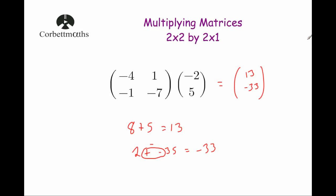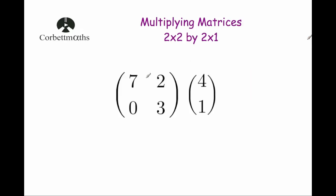And that's it. So to multiply a 2 by 2 matrix by a 2 by 1 matrix, we multiply the first row by the column, and then the second row by the column. You multiply the number on the top left by the number on the top, the number on the top right by the number beneath it, and add those two together. Then for the second row, you multiply the number on the bottom left by the number on the top, the number on the bottom right by the number beneath it, and add those two together.